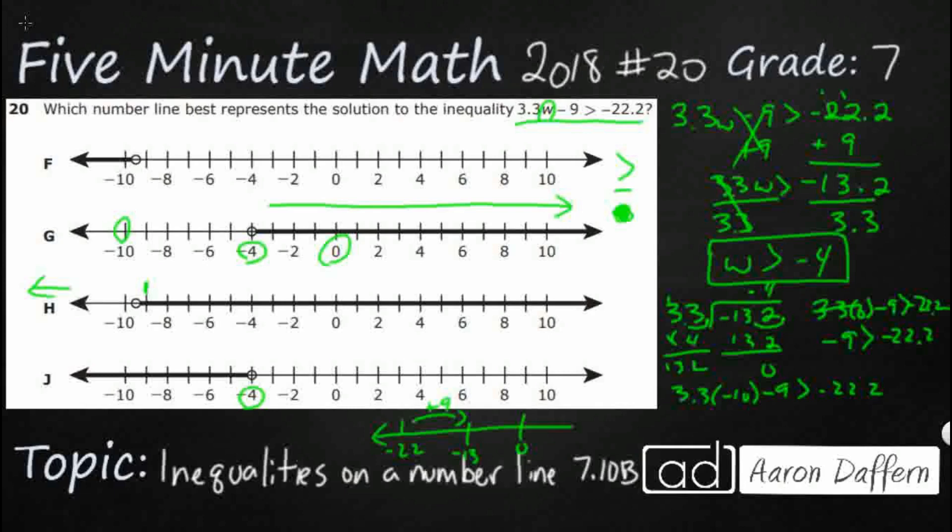So that's going to be negative 33 minus nine is greater than negative 22.2. That's negative 42. And negative 42 is farther away from zero, which means it is less than not greater than. So our answer here is G.